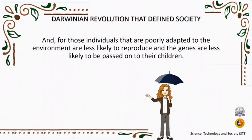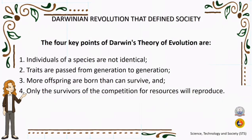As a consequence, those individuals most suited to their environment survive, and given enough time, the species will gradually evolve. To summarize, there are four key points of Darwin's theory of evolution through natural selection: first, individuals of a species are not identical; second, traits are passed from one generation to another; third, more offspring are born than can survive; and fourth, the only survivors of the competition for resources will reproduce.